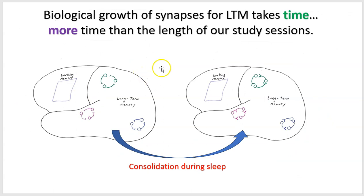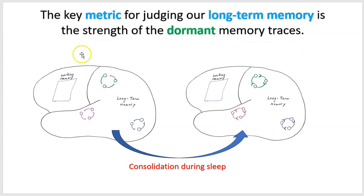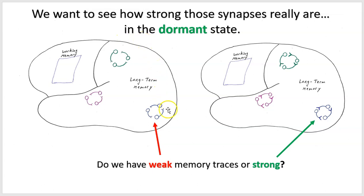It takes time for biological growth to go from weak synapses to strong synapses — more time than a single study session. We need sleep and consolidation, and repeated study sessions. During a study session, the temporary increase in synapses can make it seem as if we have strong cortical memory traces. So the key metric for judging long-term memory is the strength of dormant memory traces. To know whether something is well stored in long-term memory, we must test the strength of those dormant memory traces — we need to see whether we have weak or strong memory traces in the dormant state.